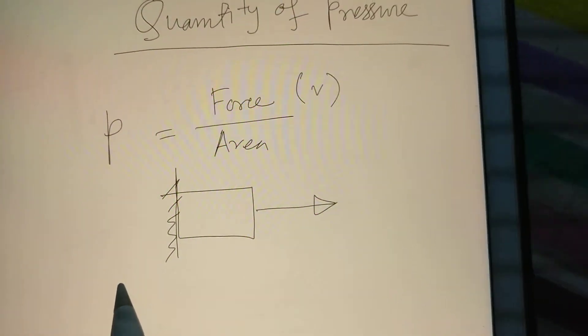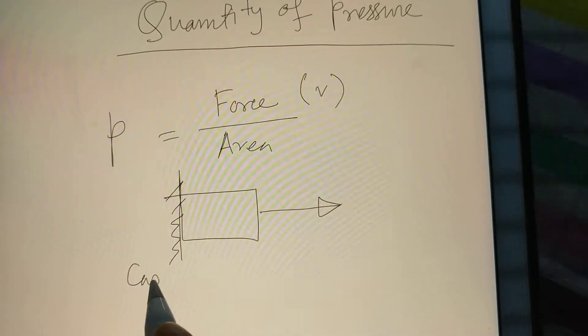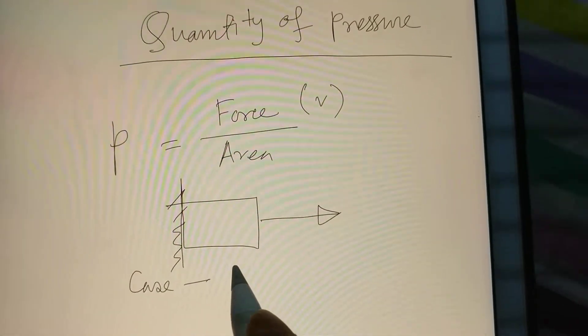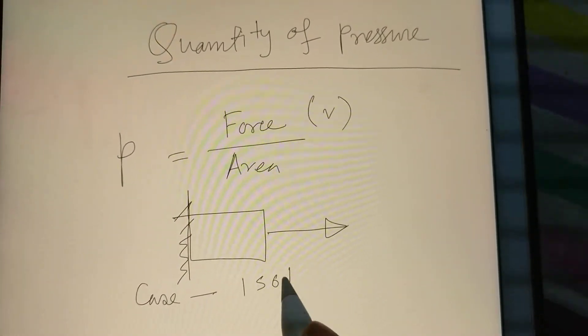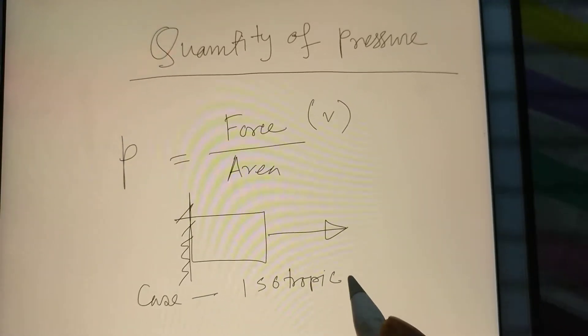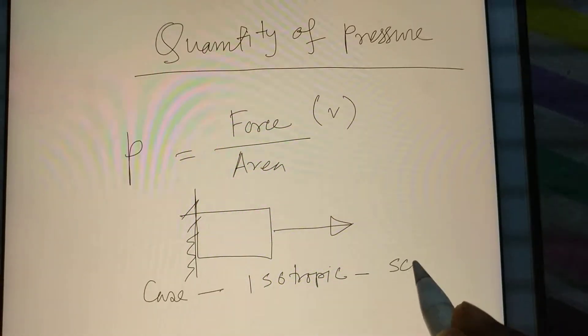If the system is isotropic, then pressure is a scalar quantity.